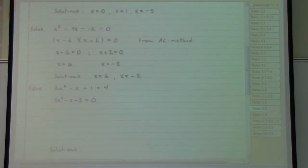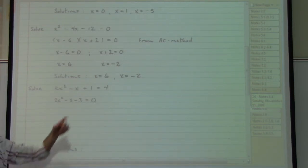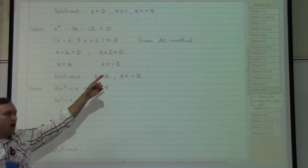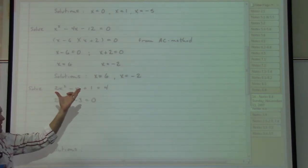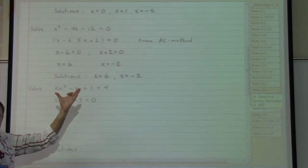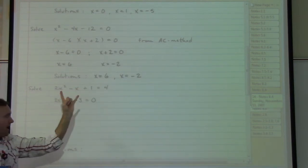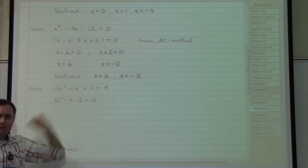Two x squared minus x plus one equals four. In this particular case, we do not automatically have the equal zero, which means that we must create that. We would create that by subtracting four on both sides in order to get 2x squared minus x minus three equals zero. I love the equal zero, but now I need to take this left-hand side and factor that.